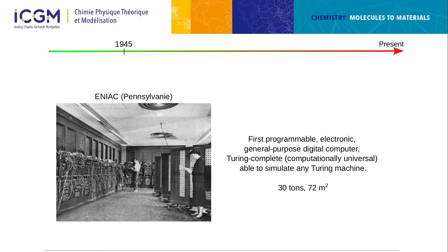ENIAC weighed 30 tons and occupied 7.2 square meters. I think it's important to mention this because quantum computers today are similarly large. Superconducting quantum computers, for instance, require a very large room full of wires. So in terms of physical scale, we've gone back about 70 years — there's still a lot to do in quantum computing.